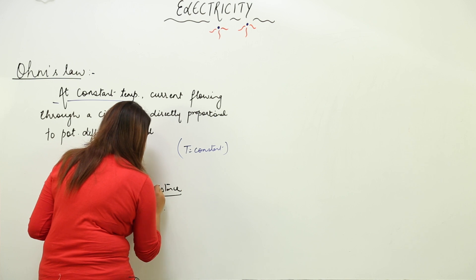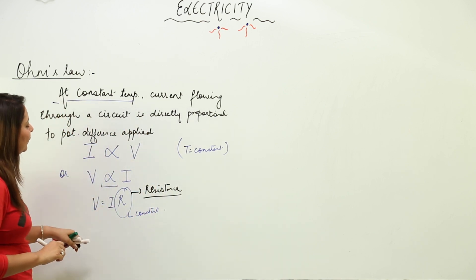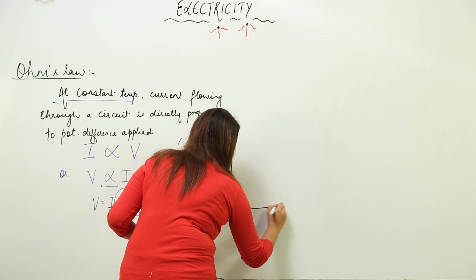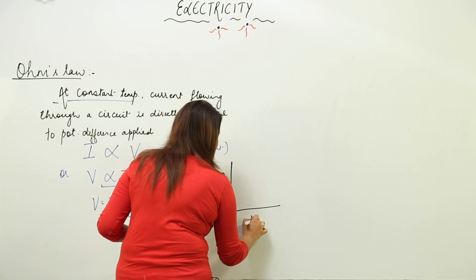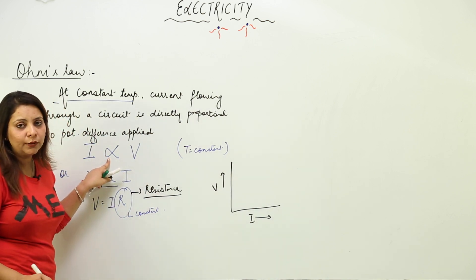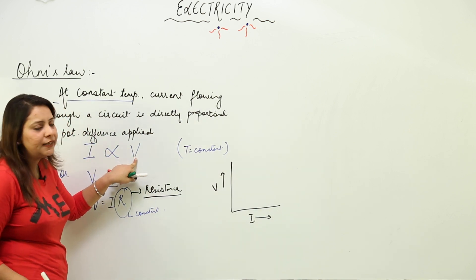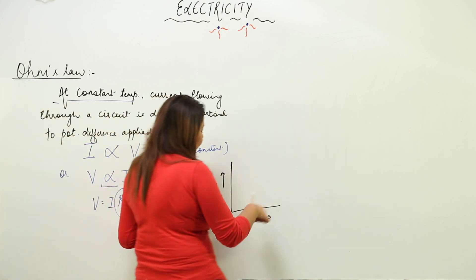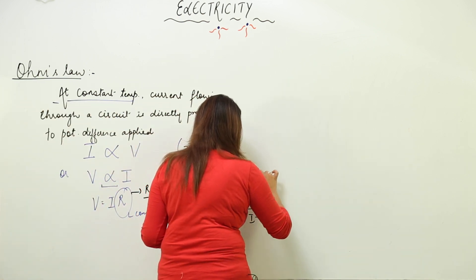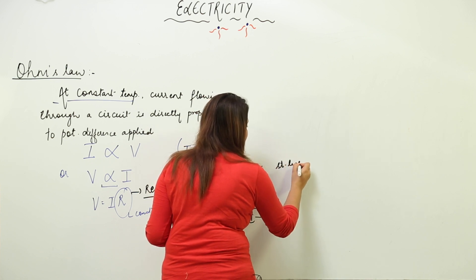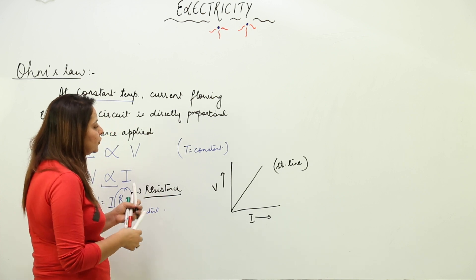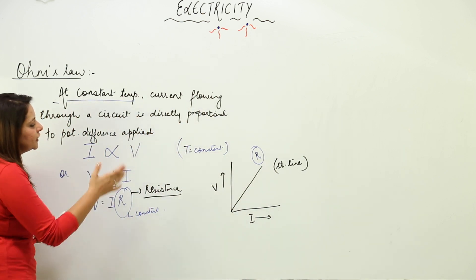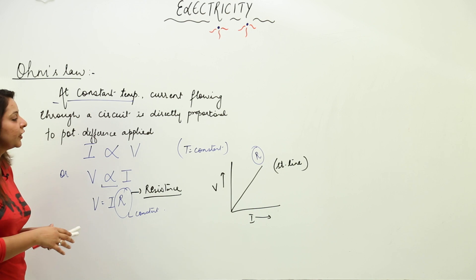To show that V is directly proportional to I, we plot a graph with V on one axis and I on the other. Since they vary directly, if one increases the other increases by the same amount, giving us a straight line graph. This straight line represents the resistance R, and this is the graph for Ohm's Law.